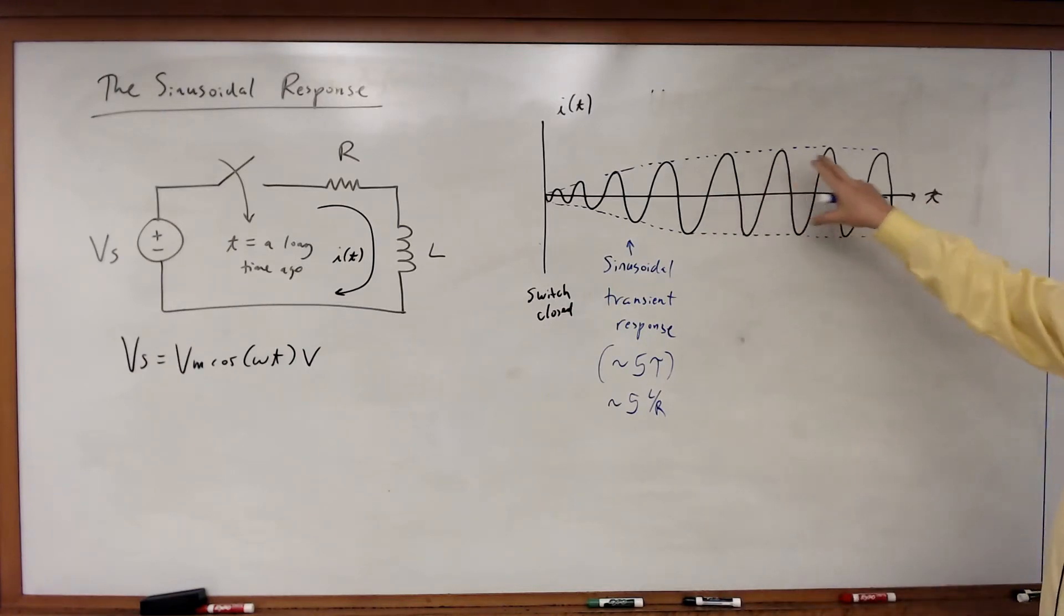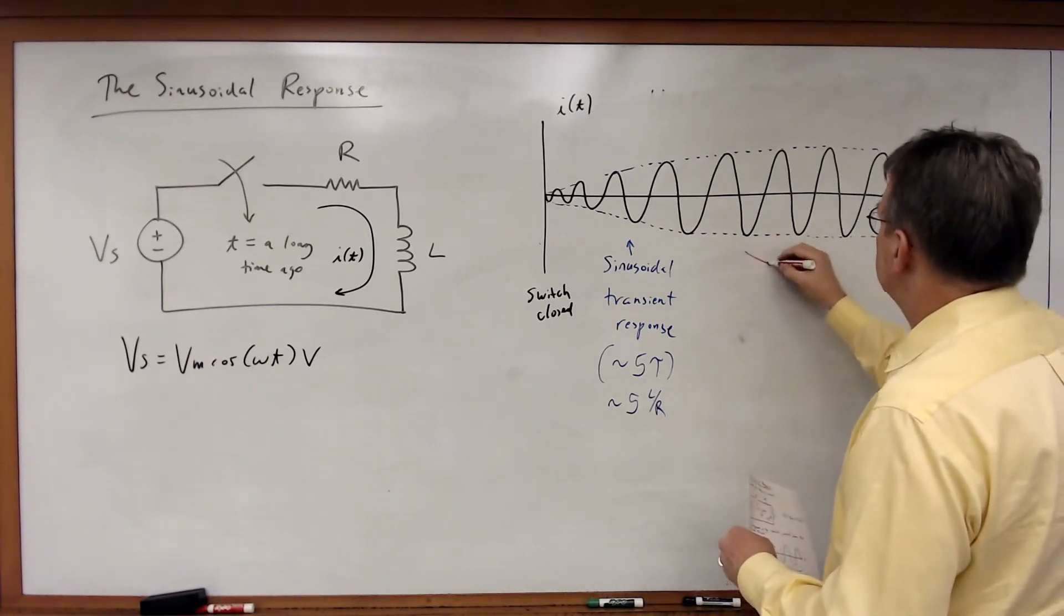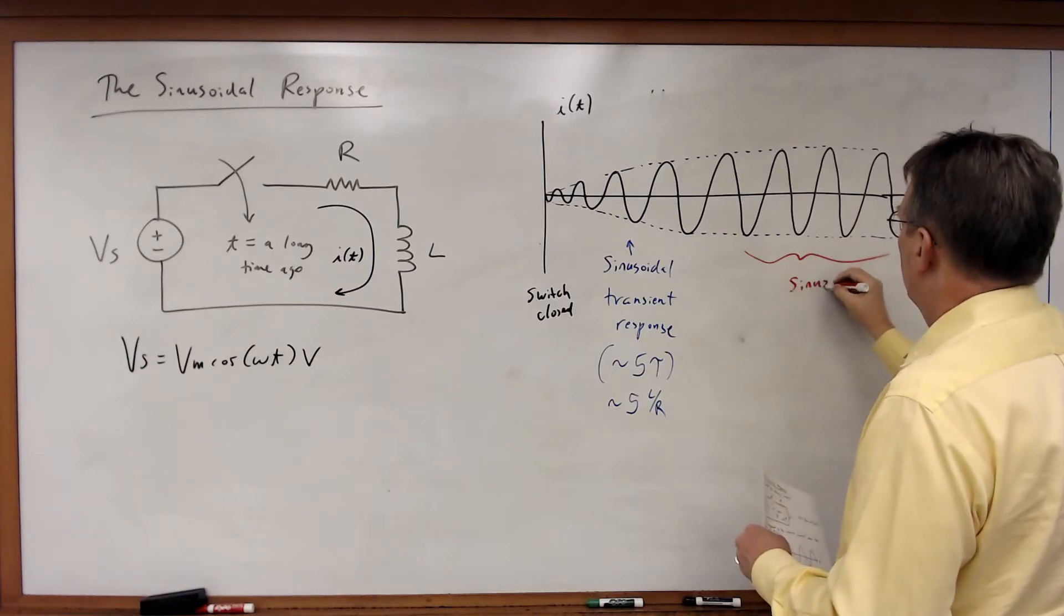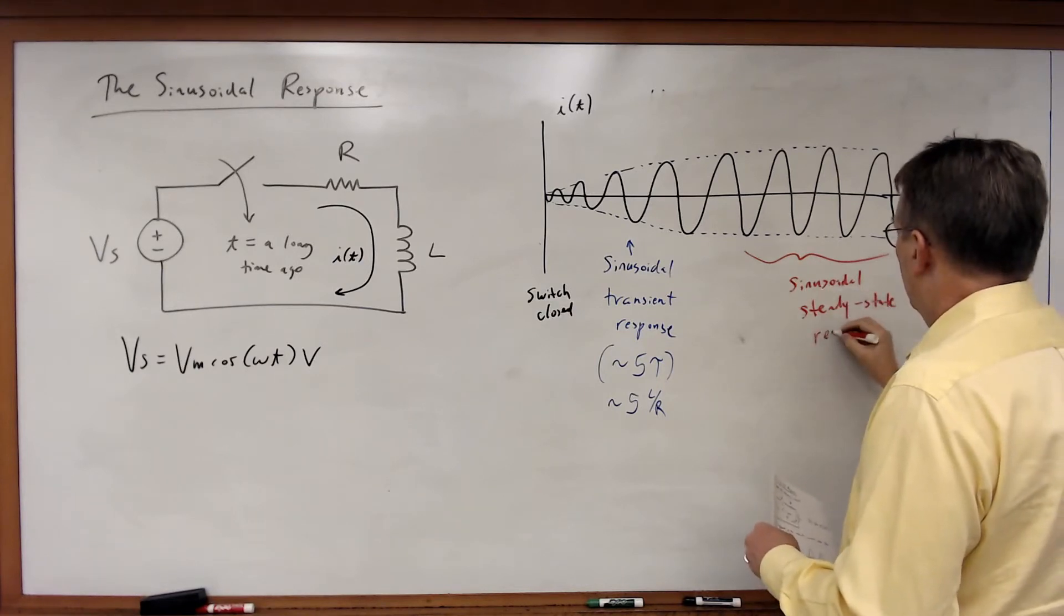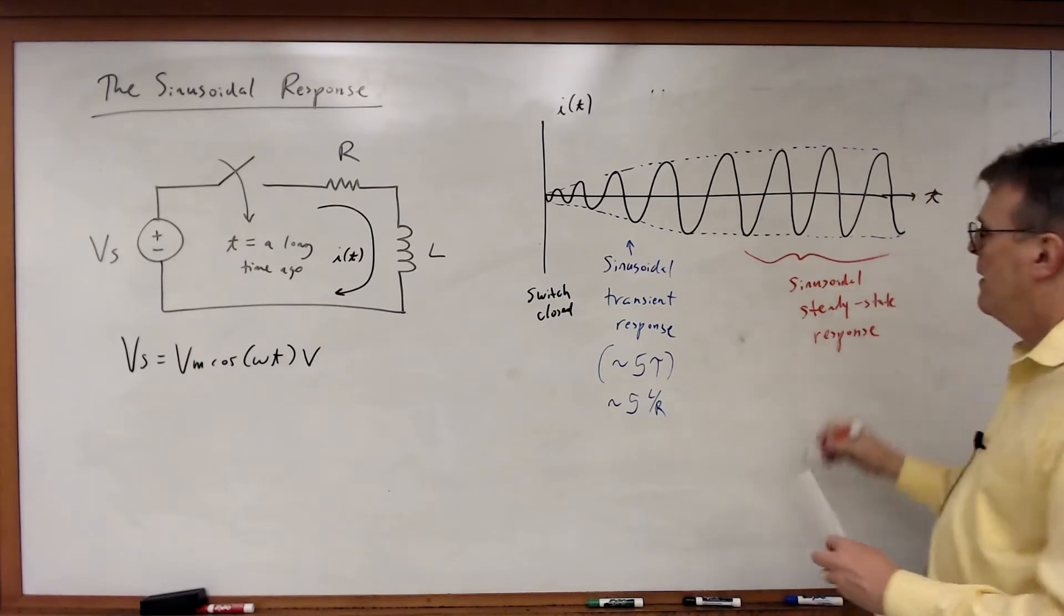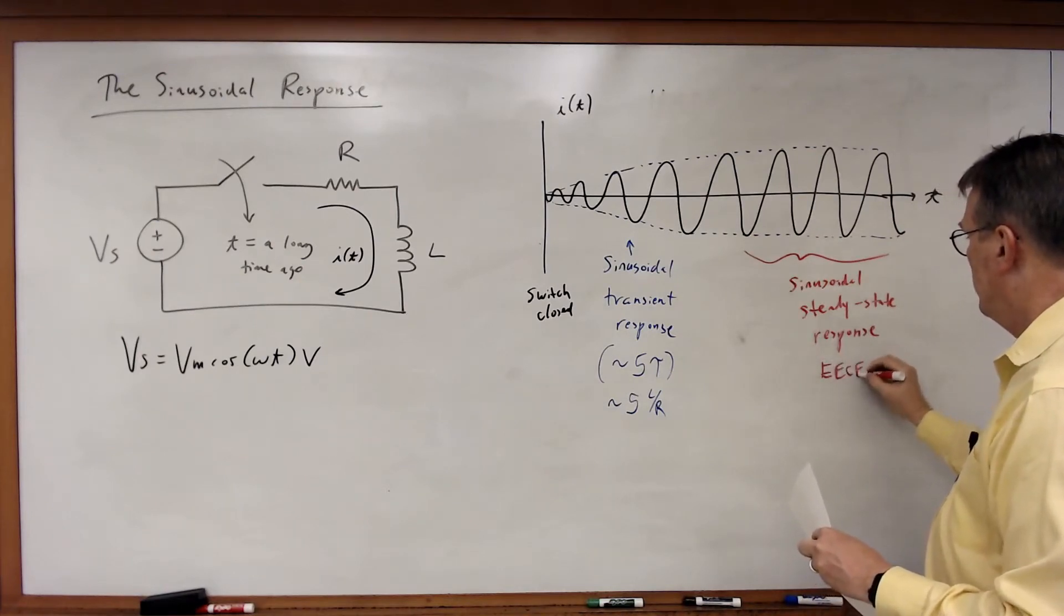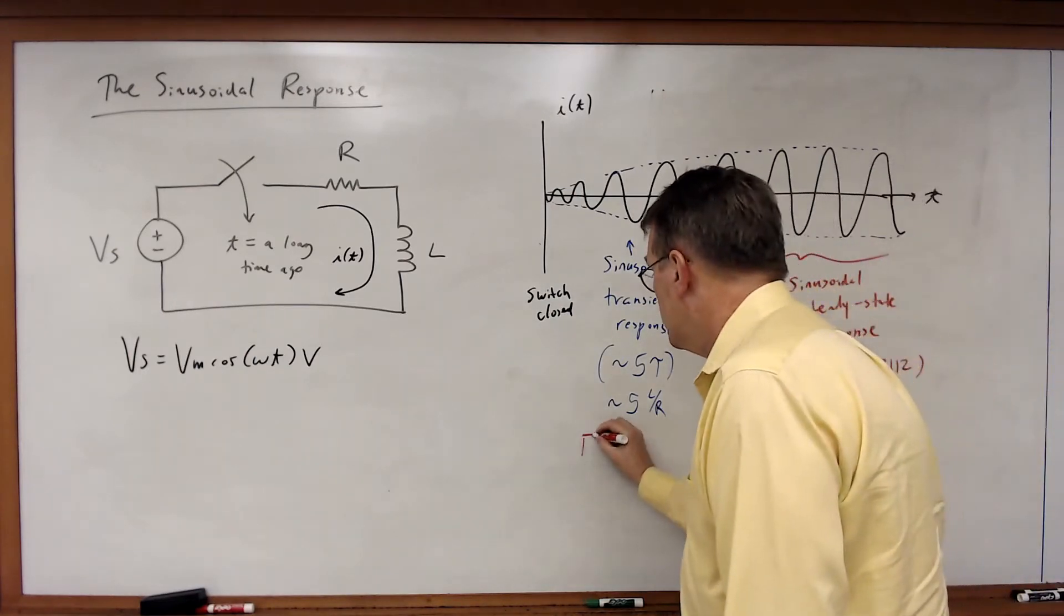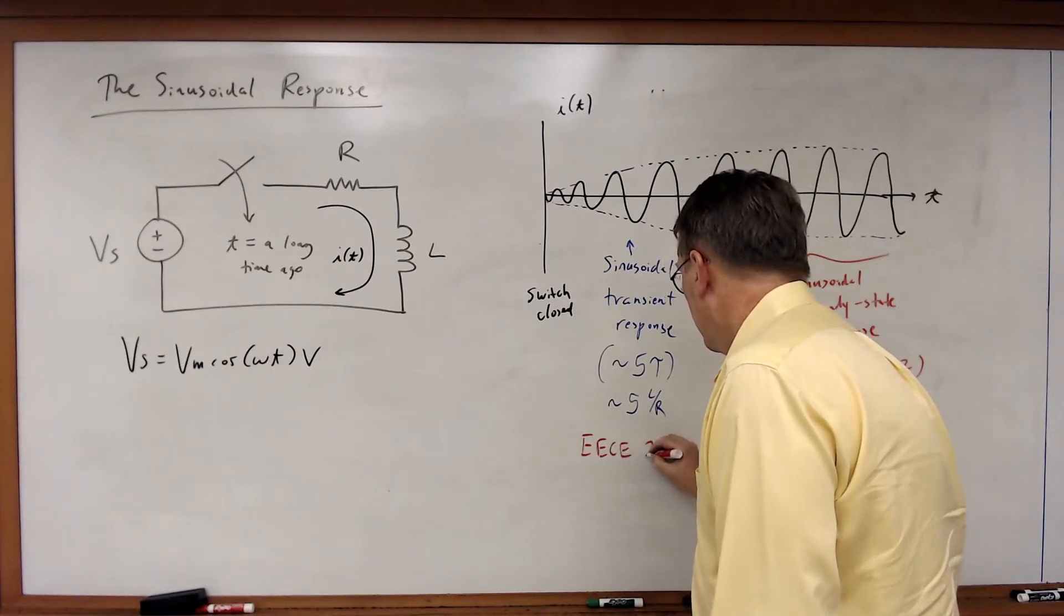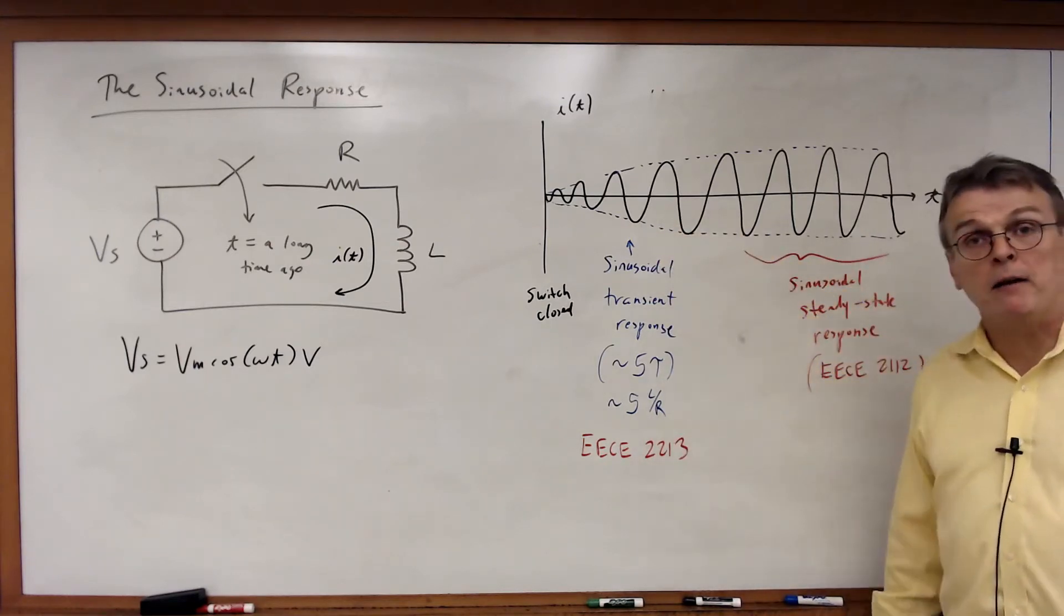So once you get to this region here, from one cycle to the next, nothing changes. This region we call the sinusoidal steady state response. Now we're going to study this in Circuits 1. The sinusoidal transient response you would learn about in Circuits 2.